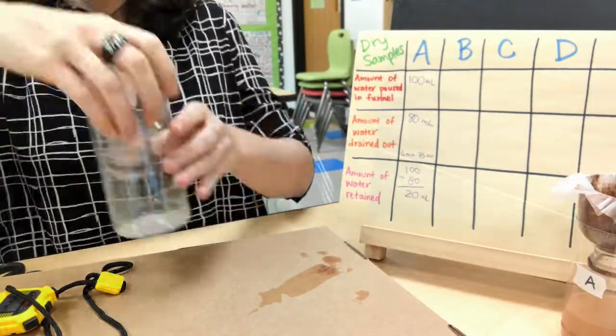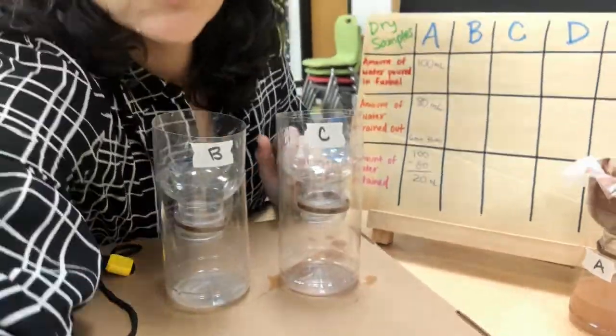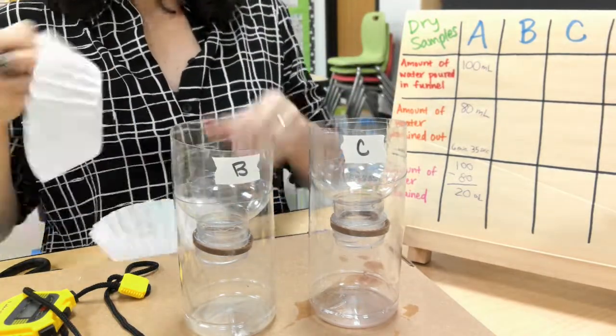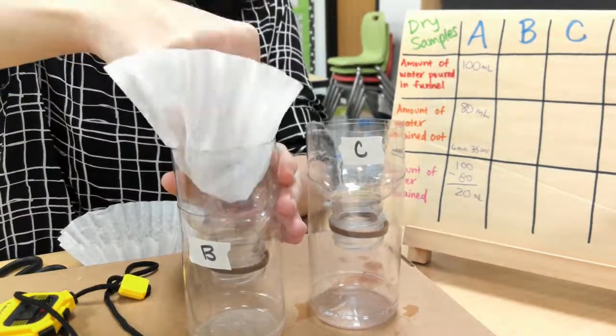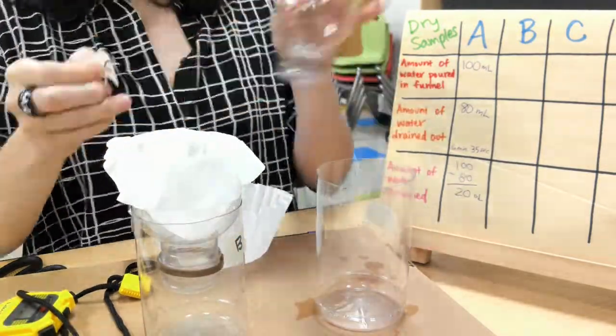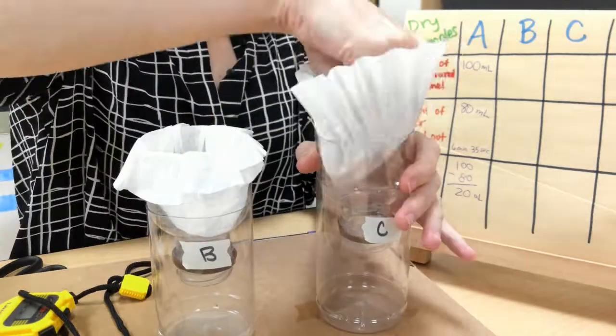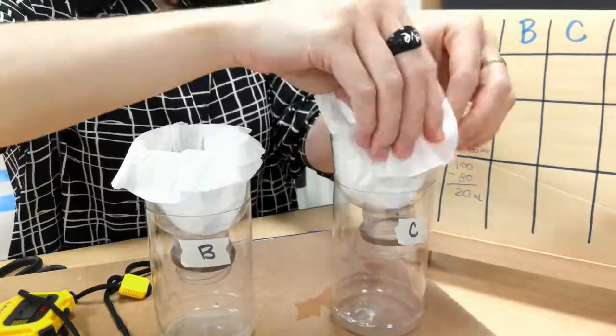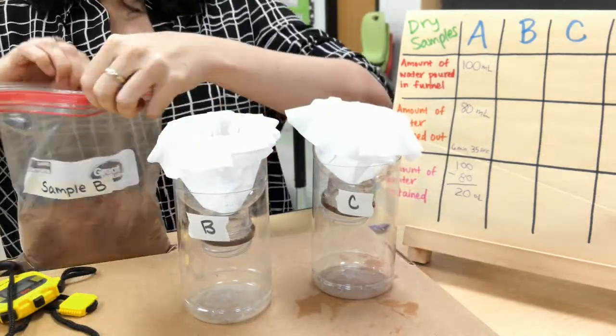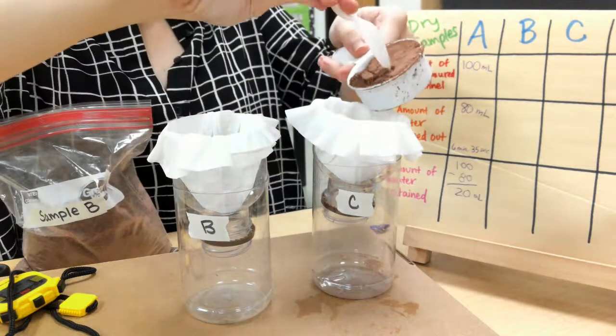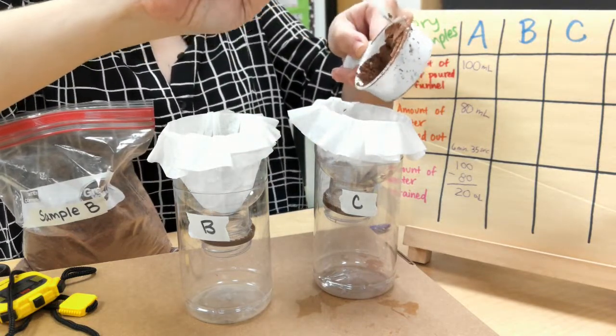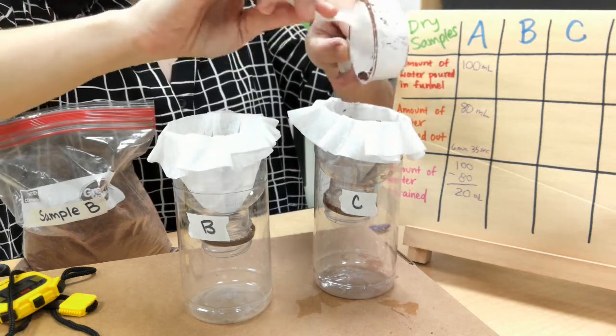And, with step twelve, you're going to need to make sure to repeat all of these experiment steps for all four remaining soil samples. So, with sample B, you'll do it with the dry soil, and then with the damp soil. And, the same with your sample C soil. You'll need to find measurements for when the soil was dry, and when the soil was damp, and so on and so forth with sample D and E.